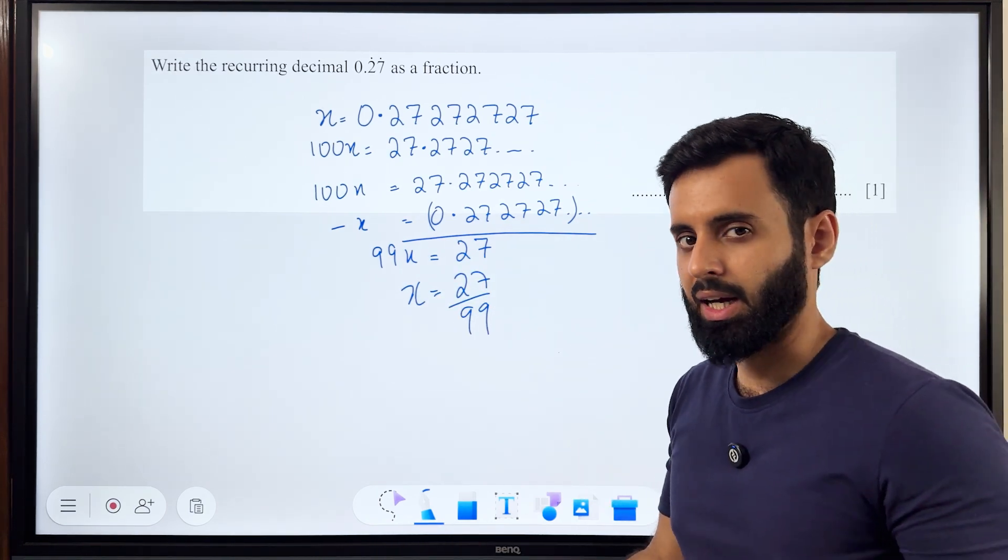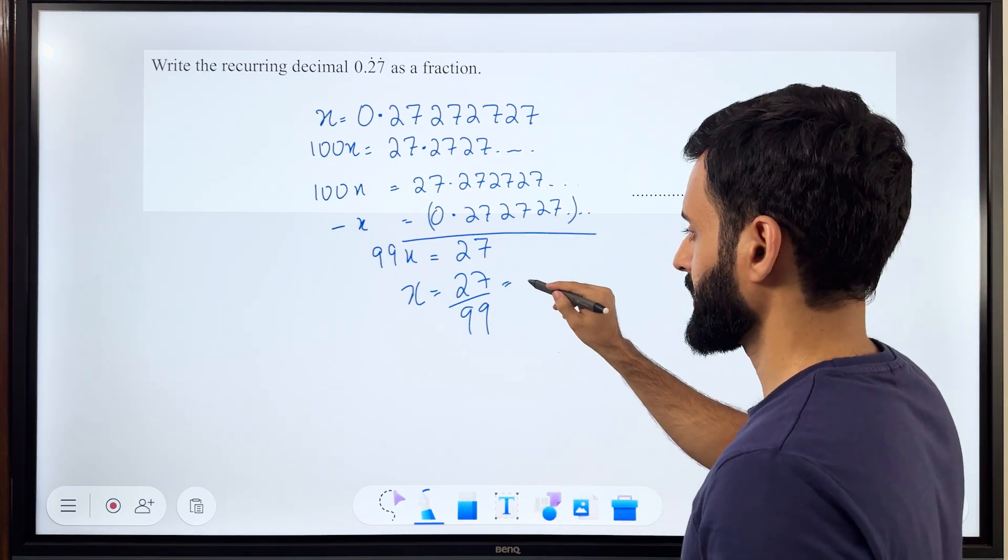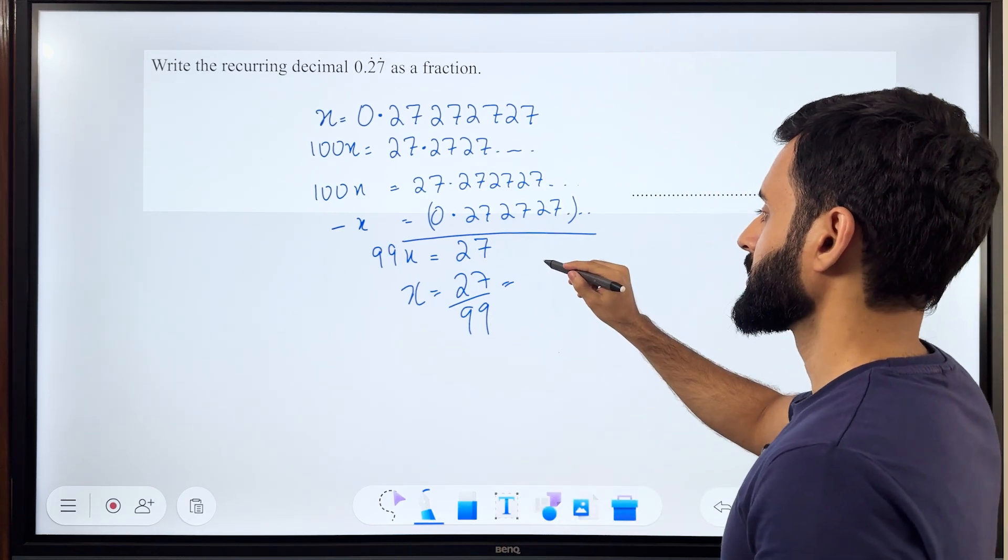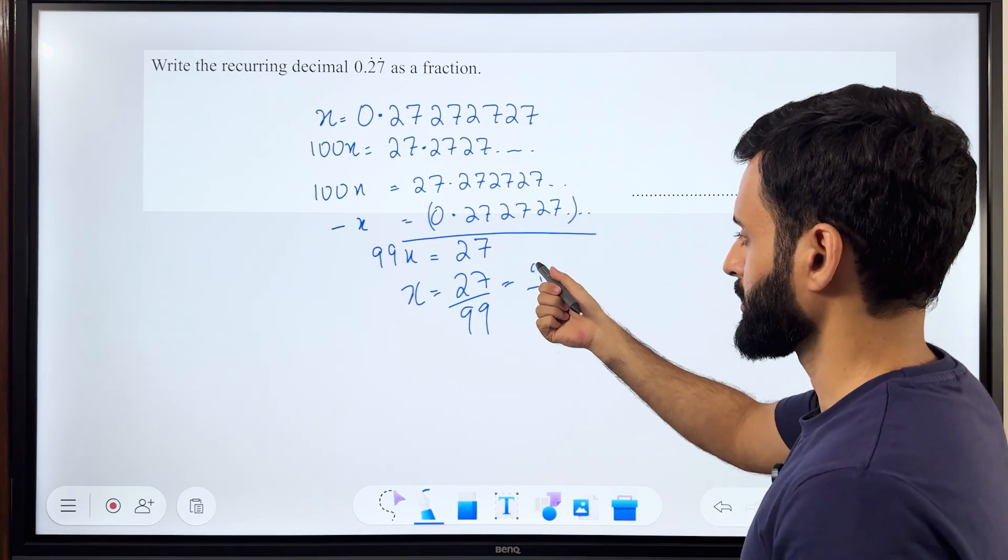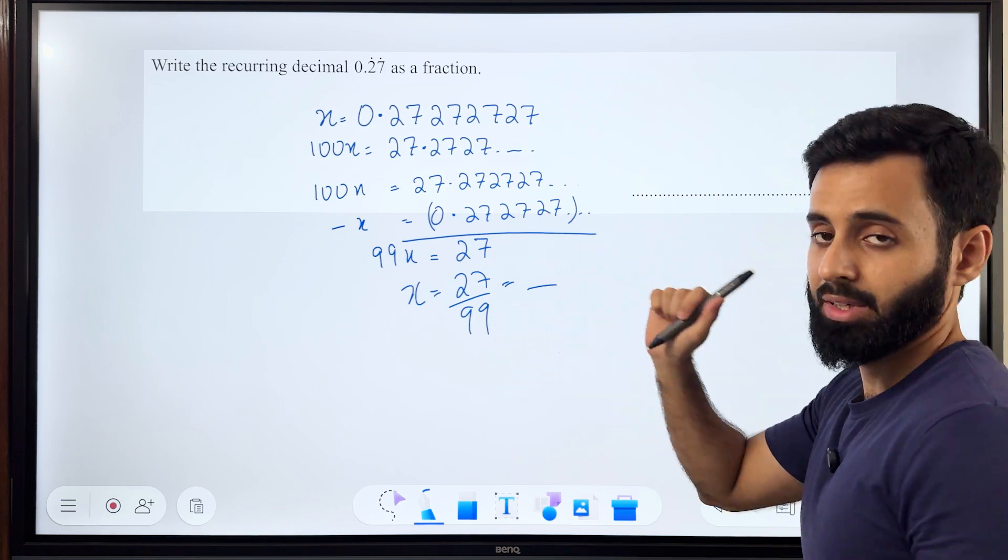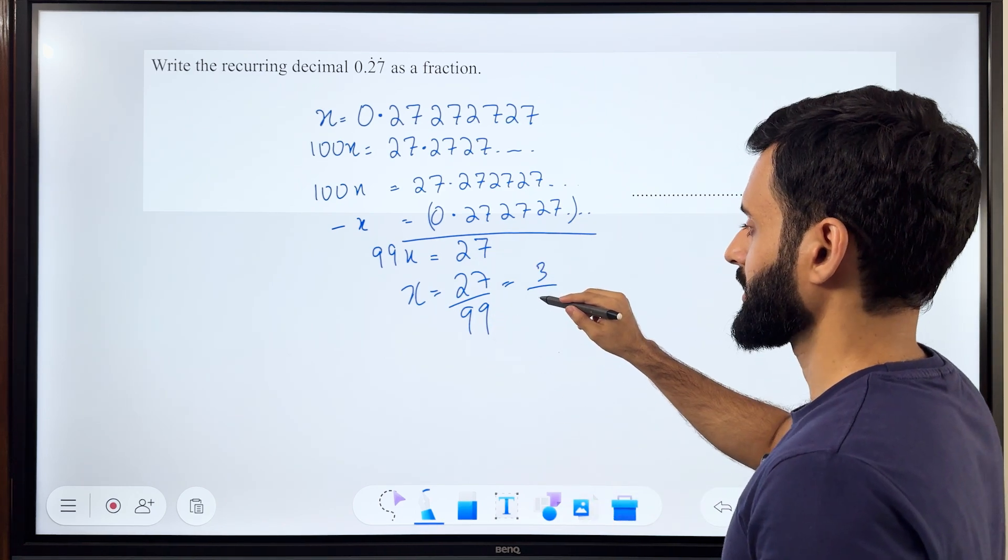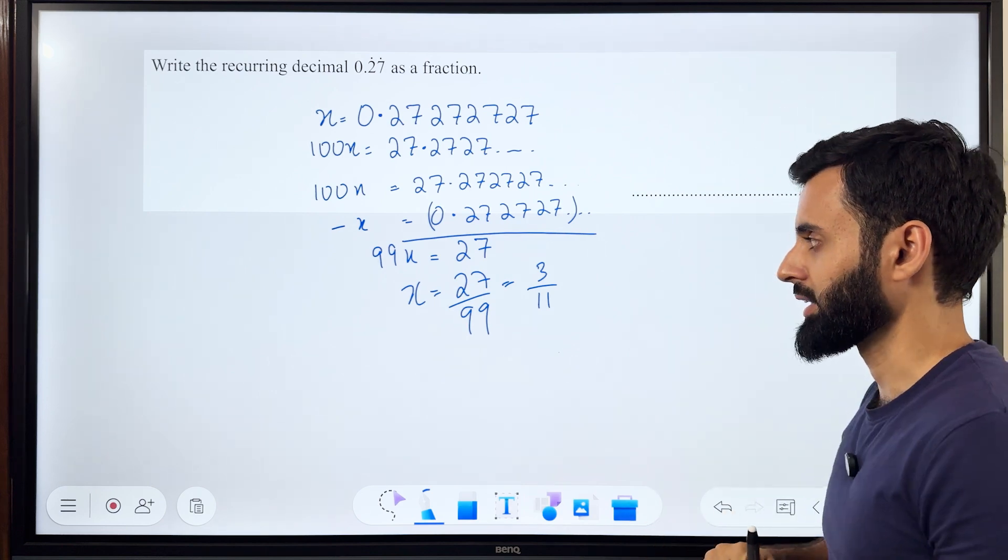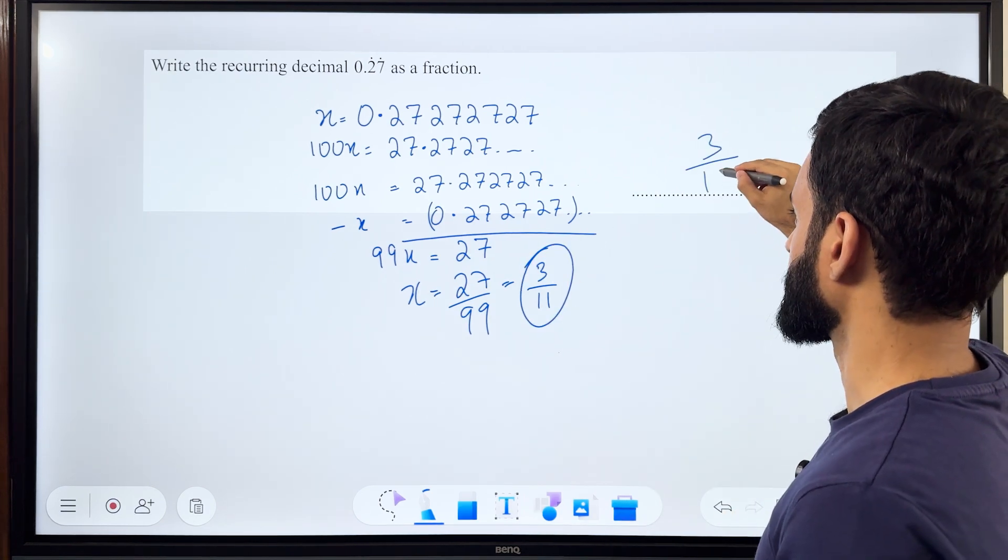Is this as simplified as it can get? Of course not. We can simplify 27 and 99 using the table of 3. 3 into 9 is 27 and 3... Actually, you know what, we can do better. We can simplify using the table of 9. 9 times 3 is 27 and 9 times 11 is 99. And there you go. 3 over 11 is the decimal value of 0.272727.